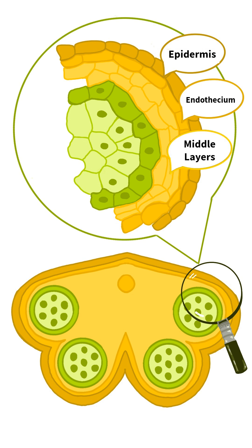Moving inwards, we encounter the middle layers, which are one to three layers thick. These layers eventually degenerate as the anther matures.